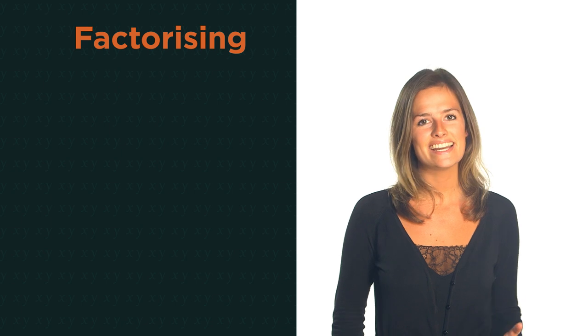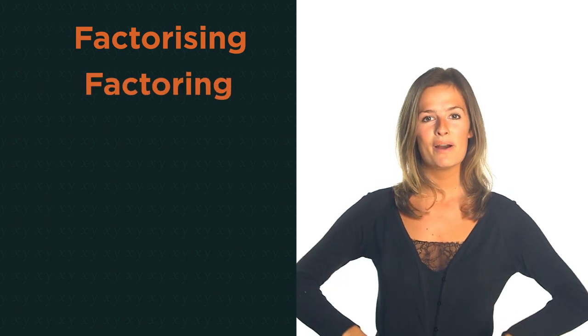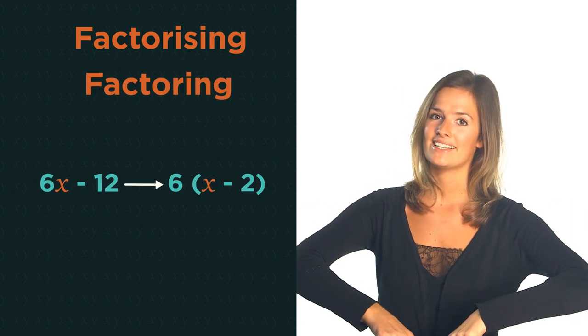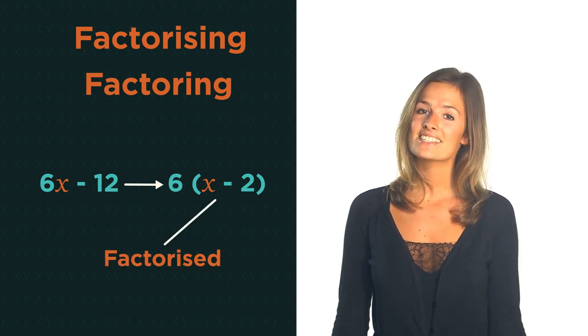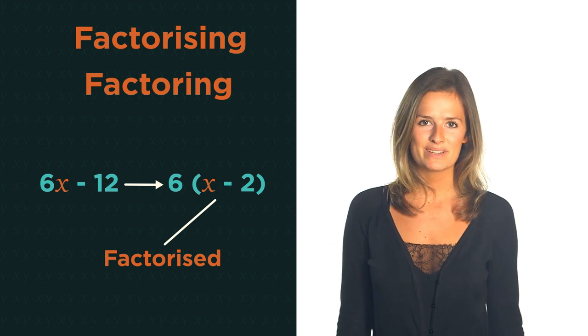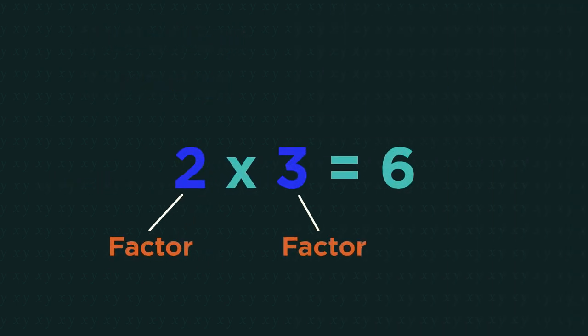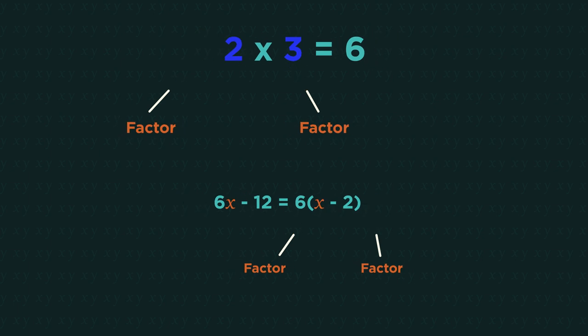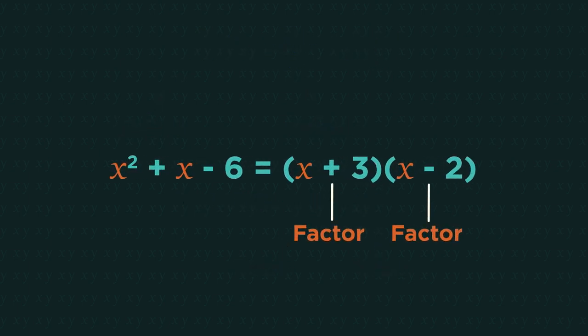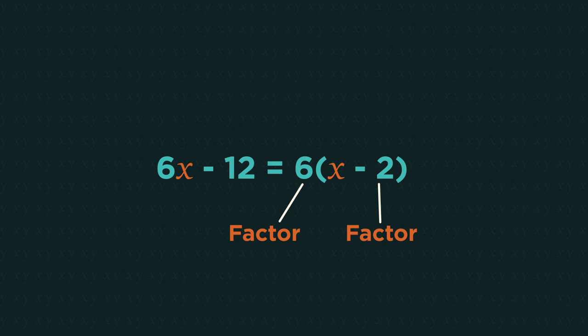In England we call it factorizing, in America it's factoring. They mean to put an expression into brackets. We say it has been factorized. Let's discover what that means and how we do it. Numbers have factors, expressions can also have factors like this and like this. Factorizing is the process of finding the factors. It's a form of simplifying and basically just means to put into brackets.